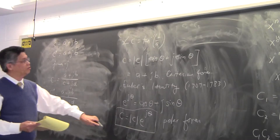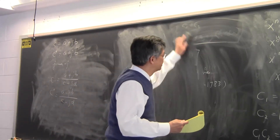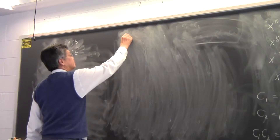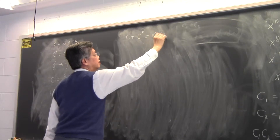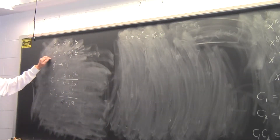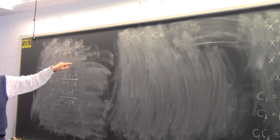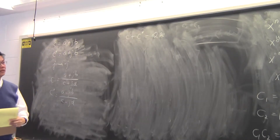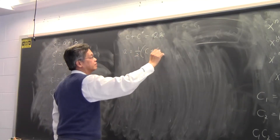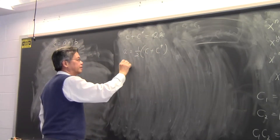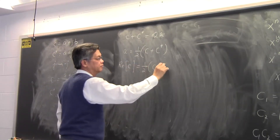So if you have a complex number C and you want to take its real part, one way is to use the fact that C plus its conjugate equals 2A. If I add C and its conjugate, the imaginary terms cancel and I get 2A on the right-hand side. So A equals half of (C plus C conjugate), or equivalently, the real part of C equals half of (C plus C conjugate).